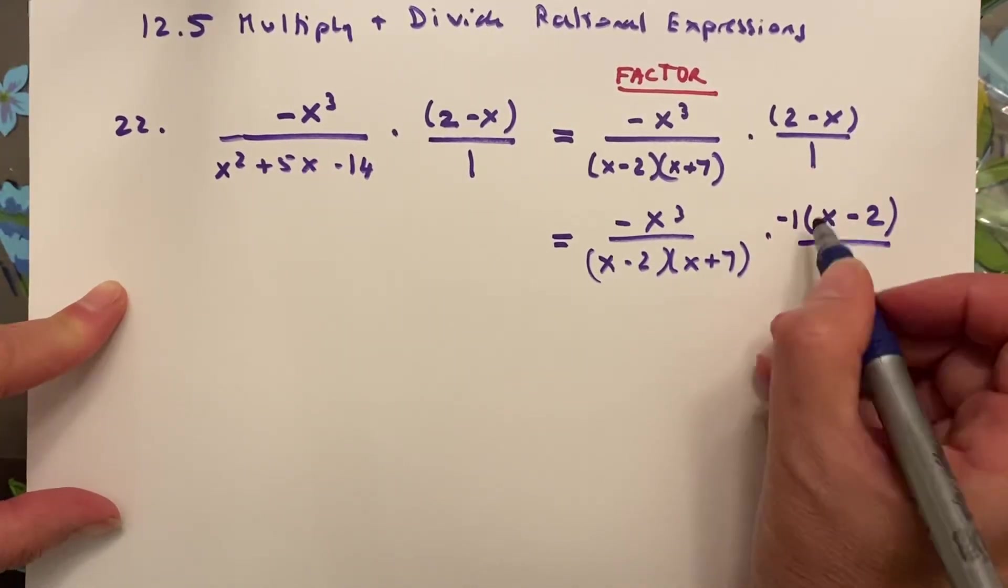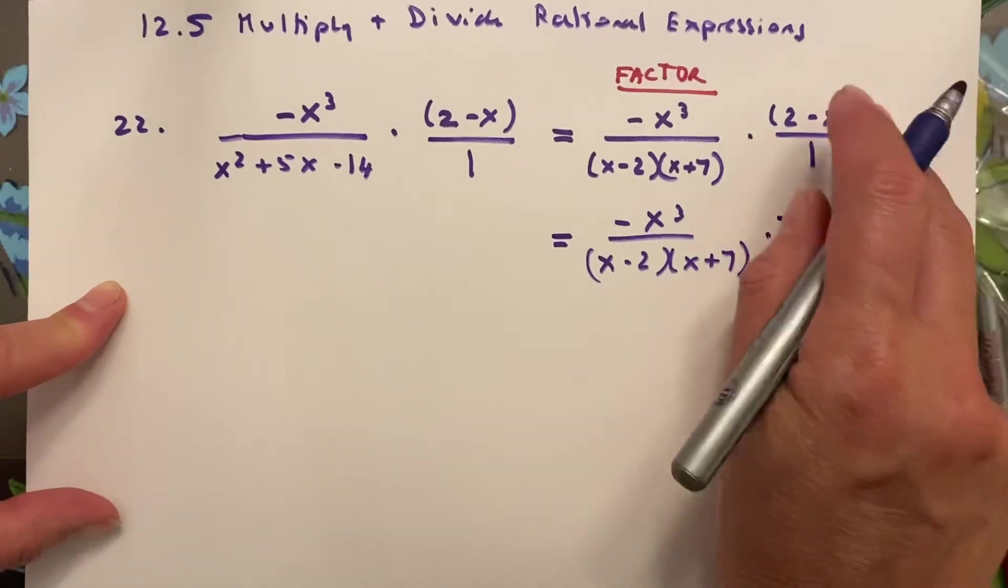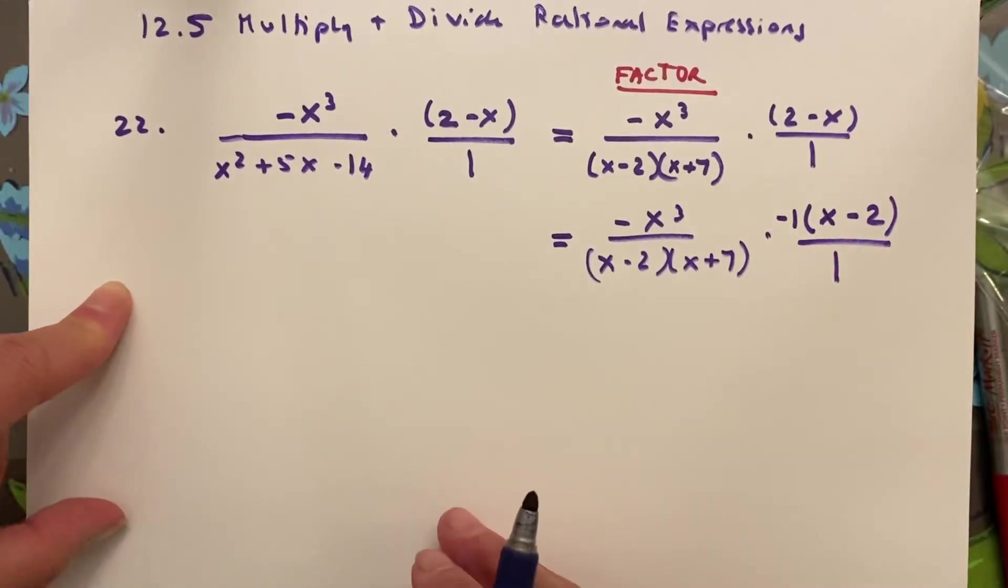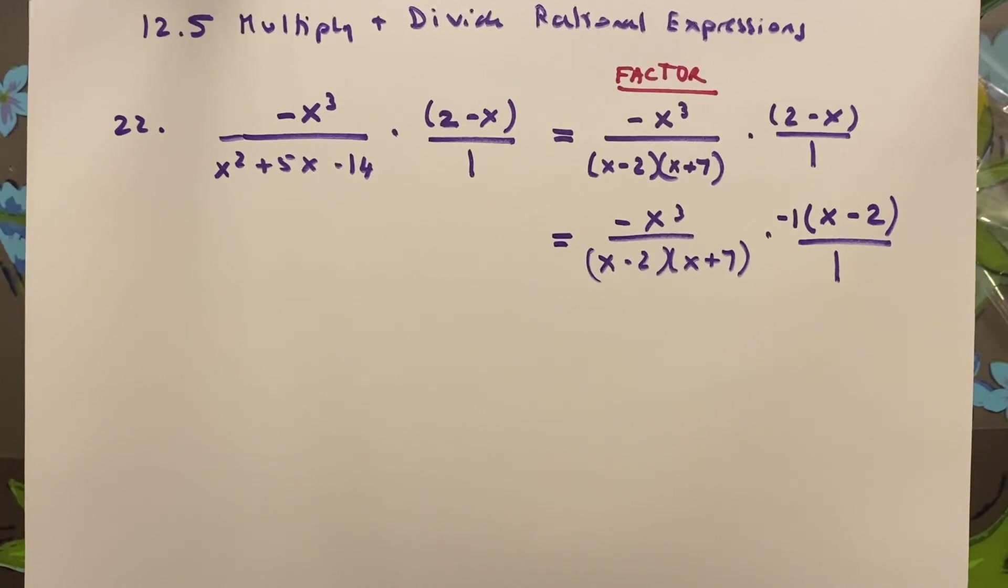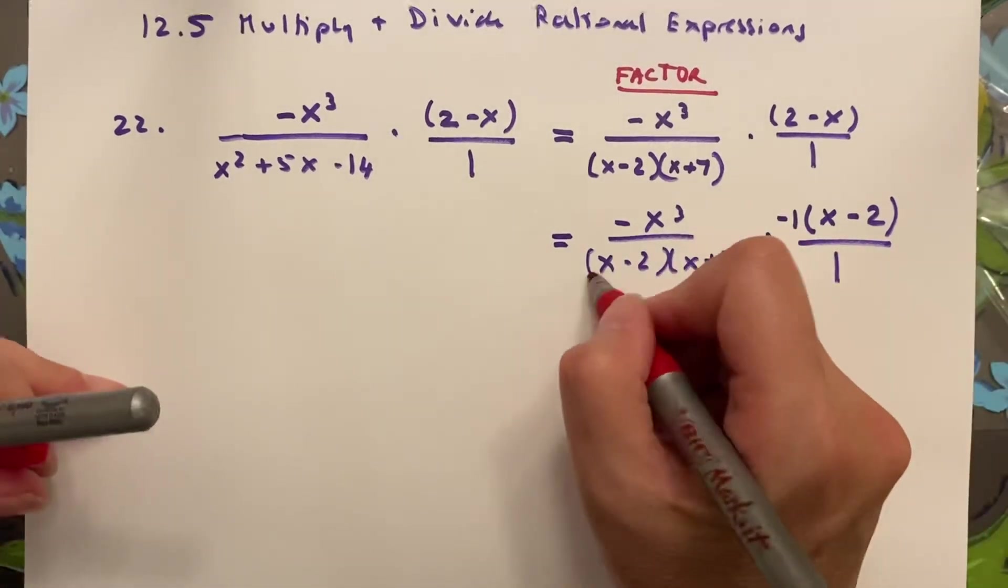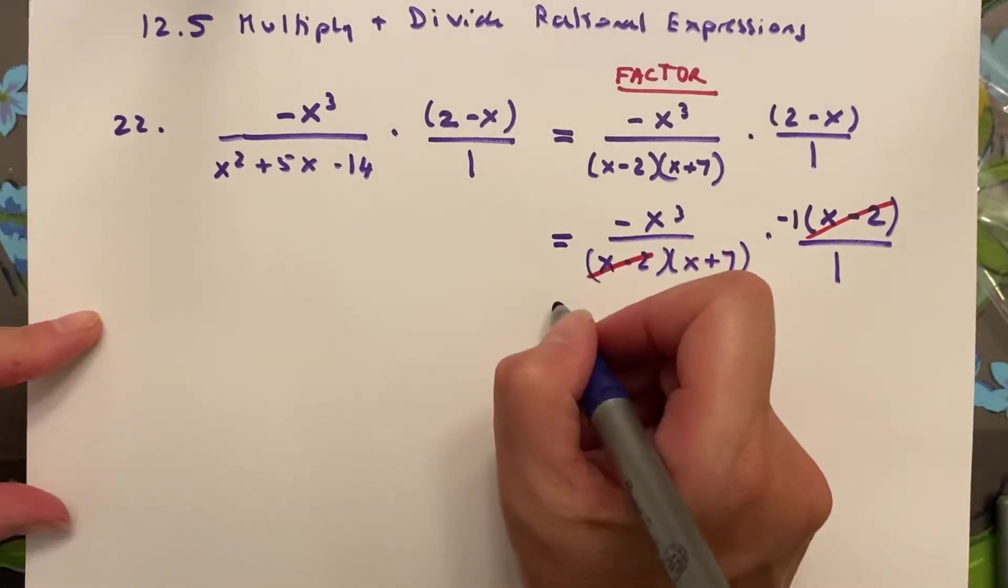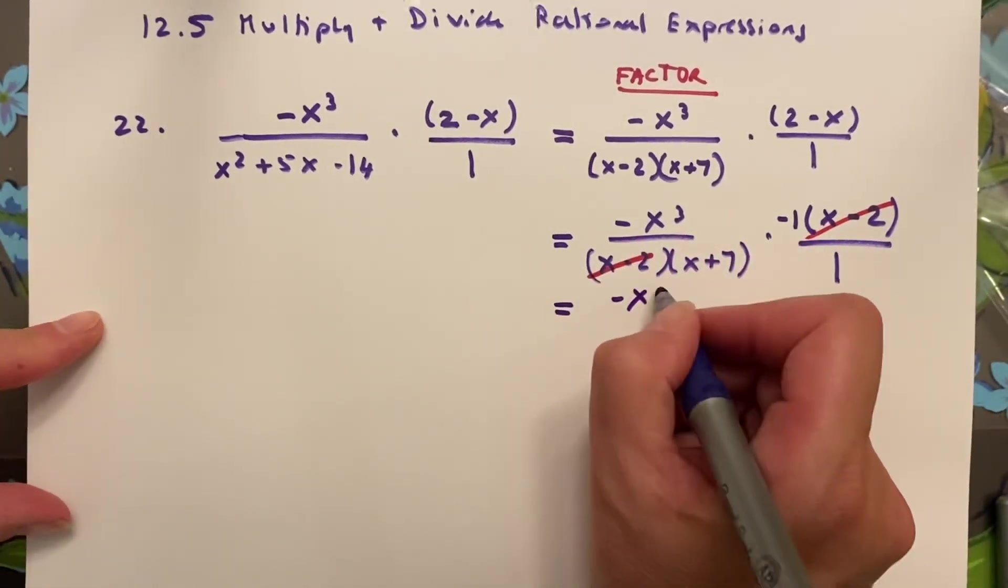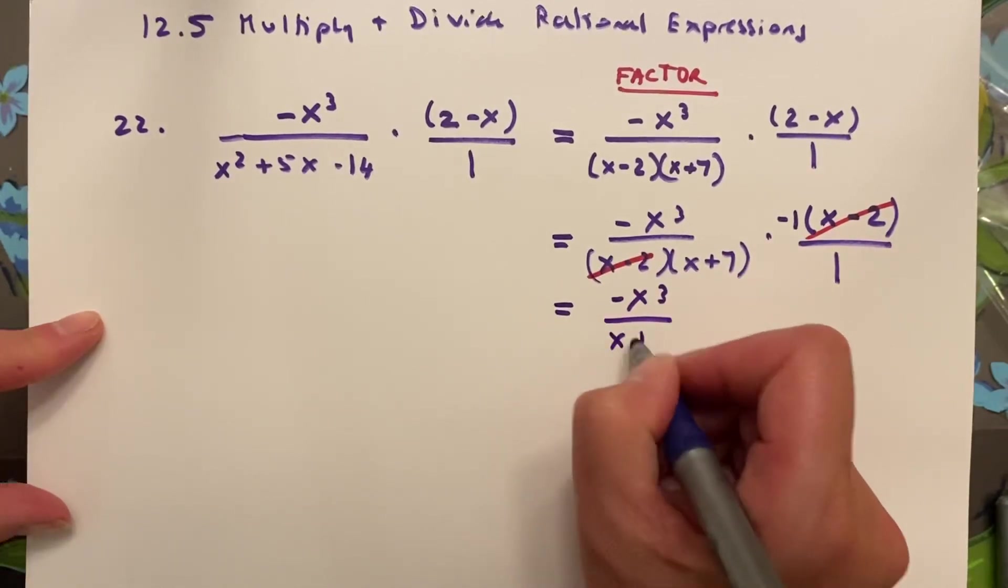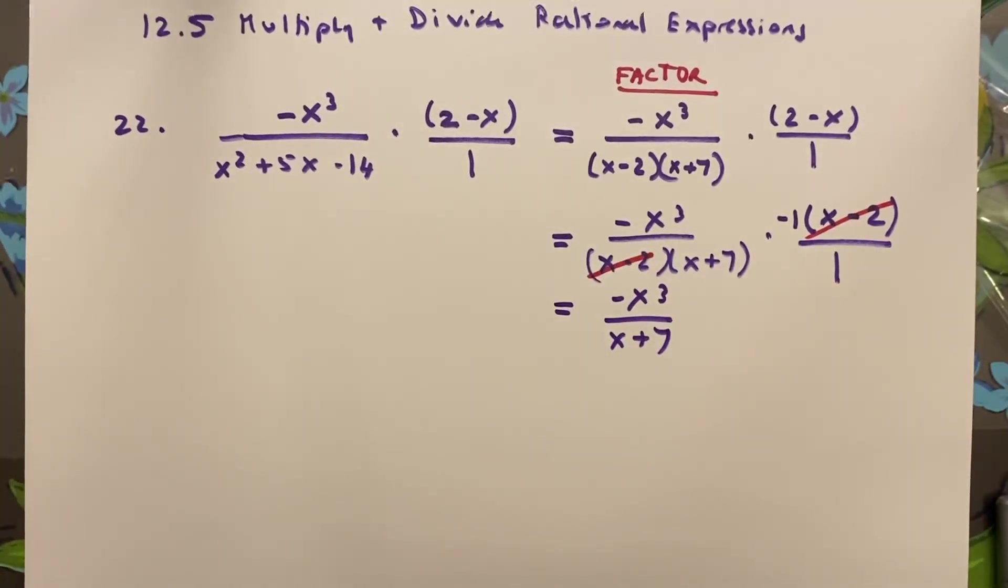Negative x, positive 2, so I really haven't changed the value, so I'm allowed to do that. What's great now that I have done that is I can cancel the x minus 2, and I'm left with negative x cubed over x plus 7, which is my answer.